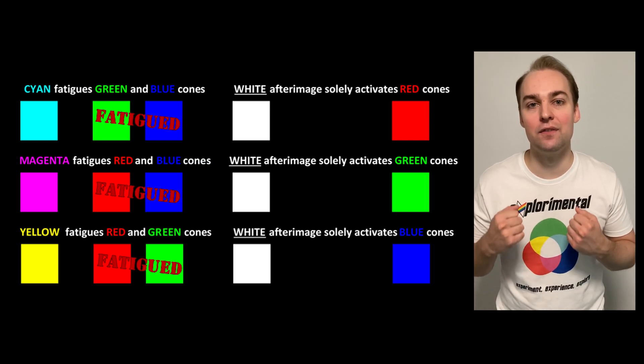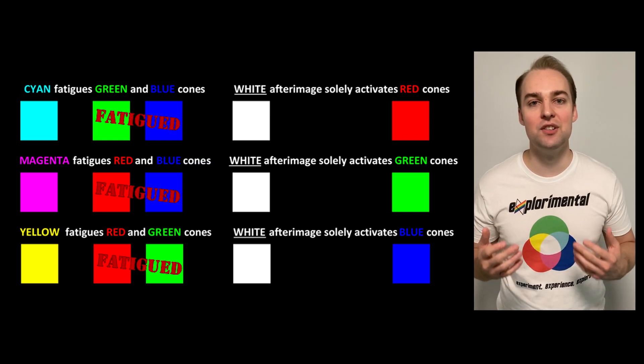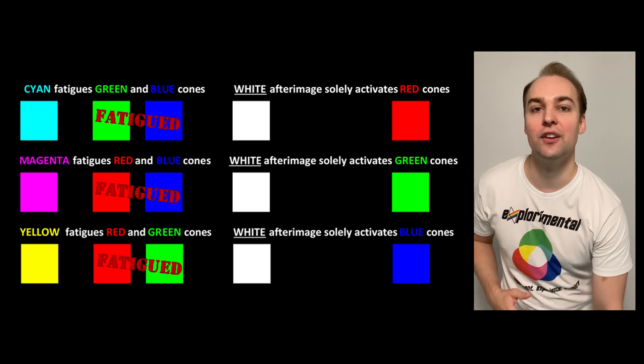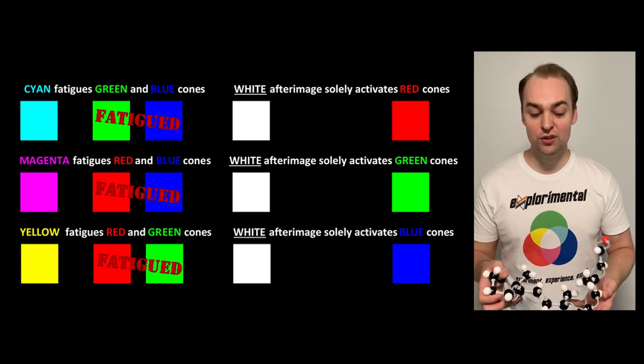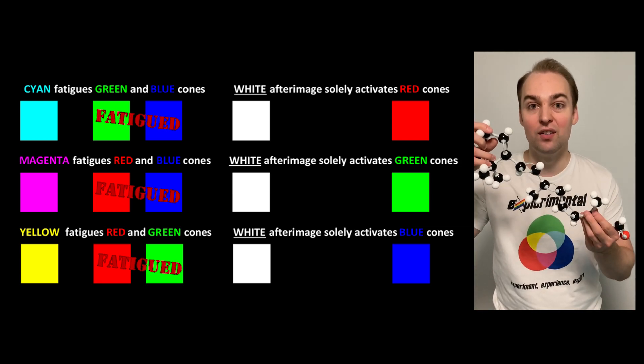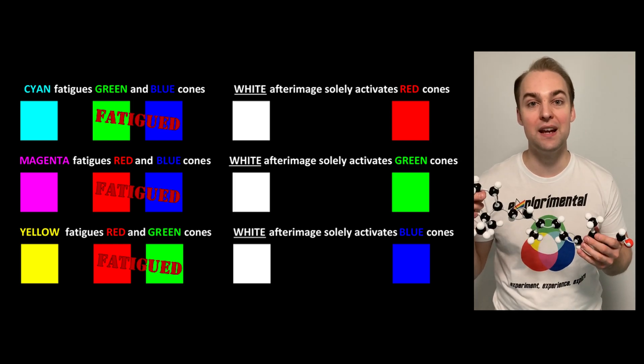By staring at intense light of the complementary colors, cyan, magenta, and yellow, we were able to cause retinal fatigue. We used up all of the cis-retinal in our cone cells that we didn't want being activated.